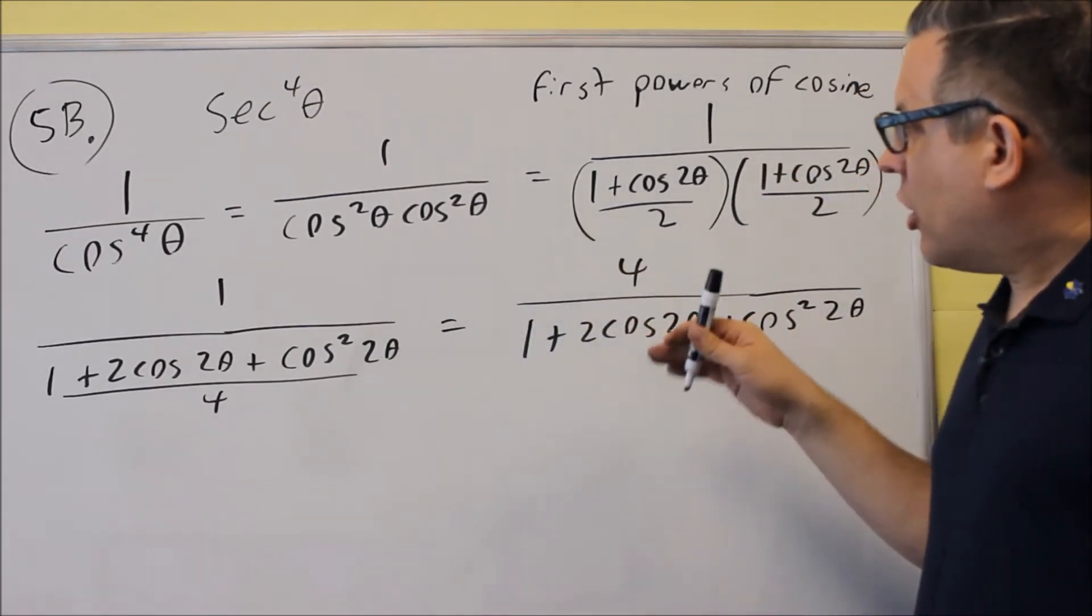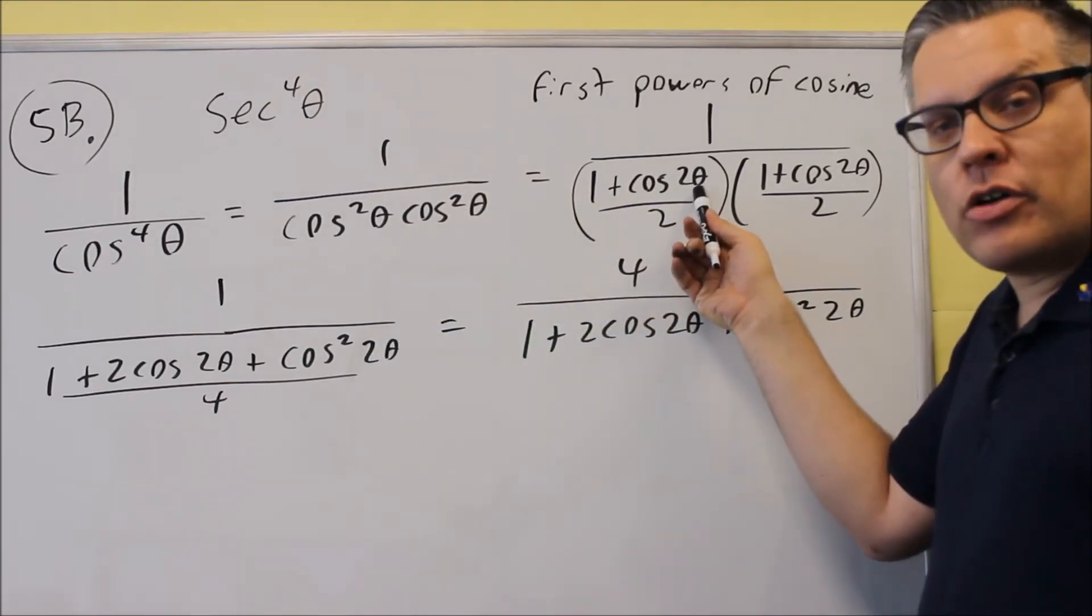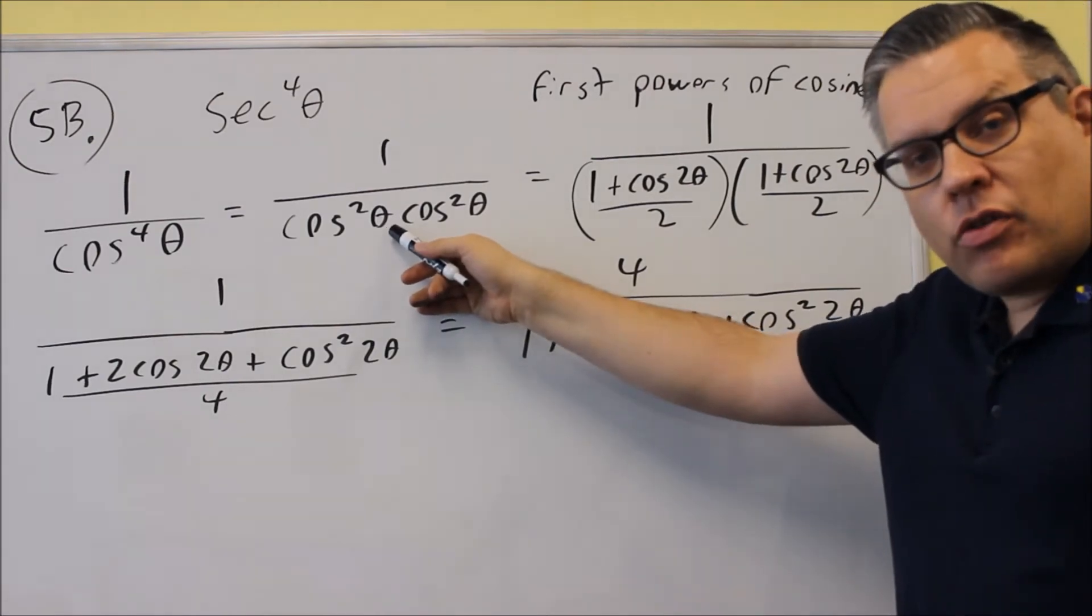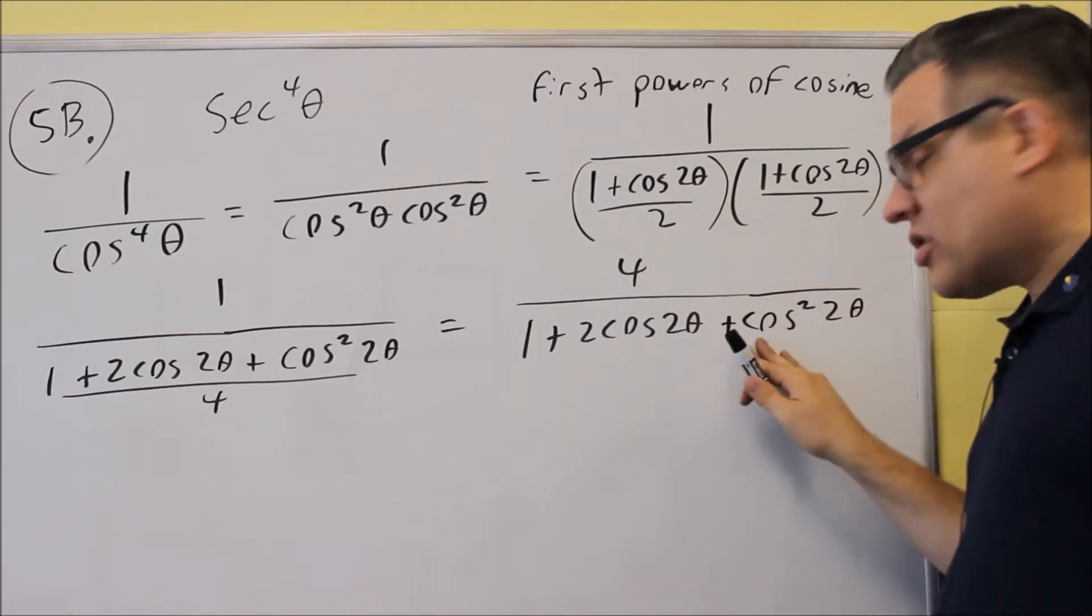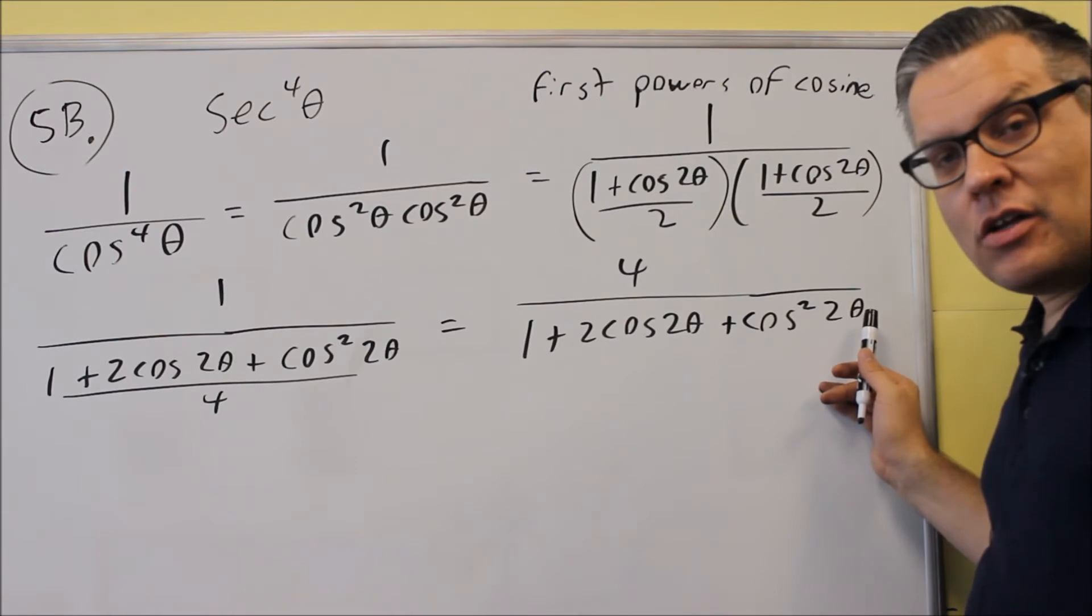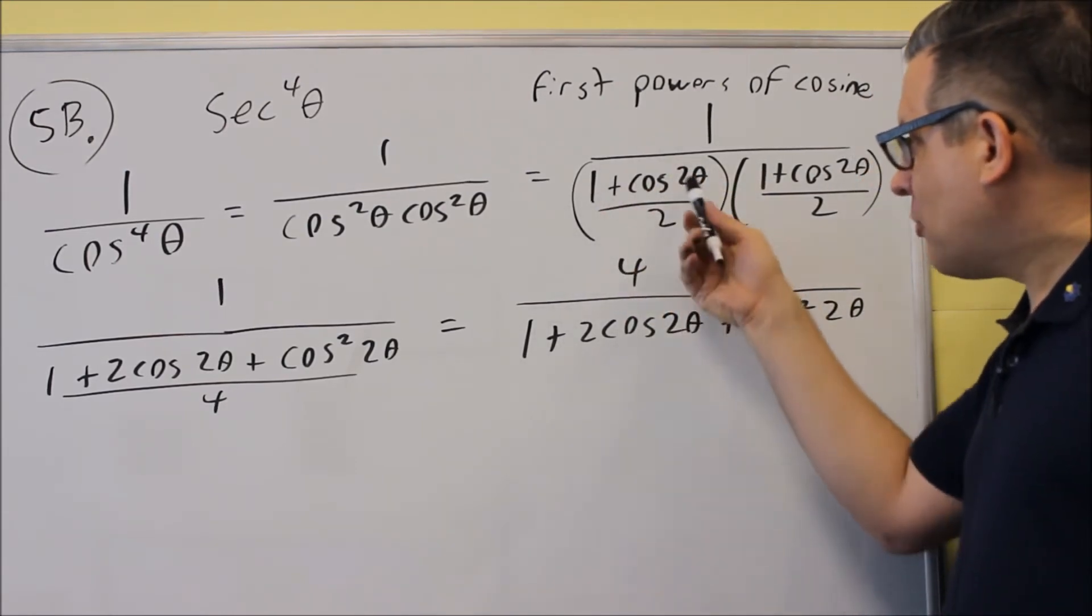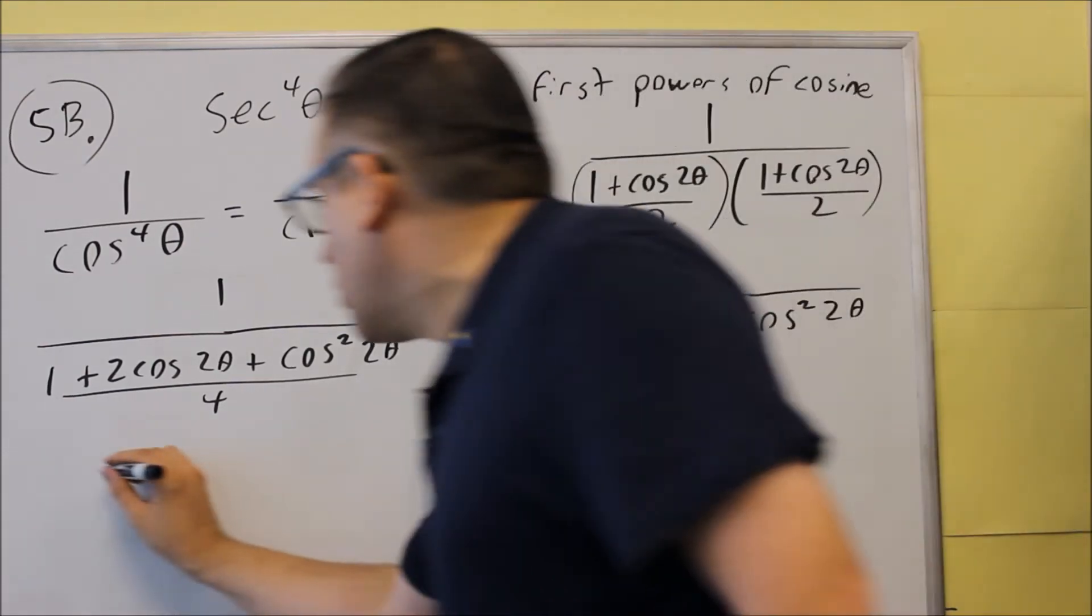Now, the way that these work is the angle you get inside here for the power-reducing formula is always going to be double the original angle you started with. So if you have a theta here from the original one, it turns into a 2 theta. Well, this time, we're going to use a power-reducing formula, but we have a 2 theta inside, which means that when we use our power-reducing formula, it's going to look just like this, except we'll put a 4 theta in there instead of a 2 theta.